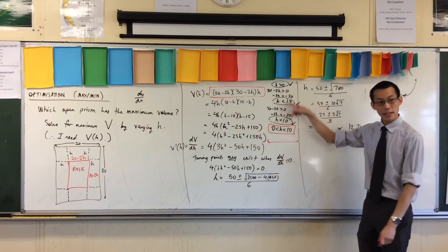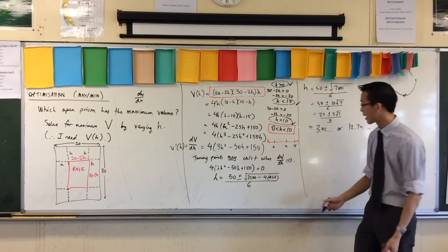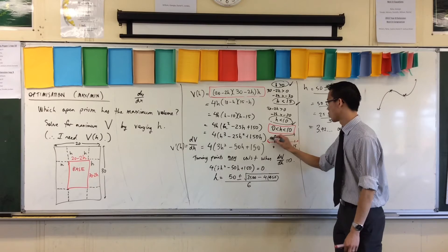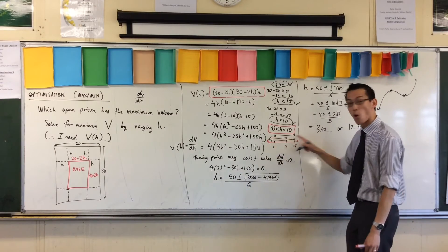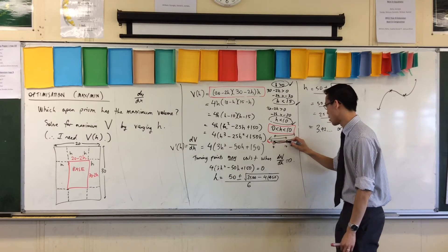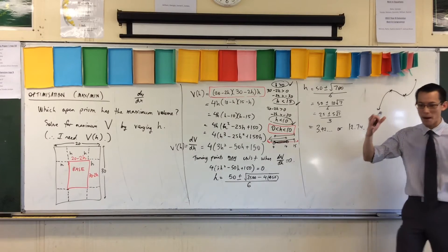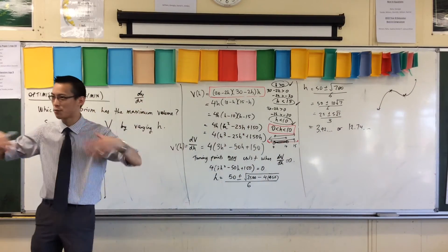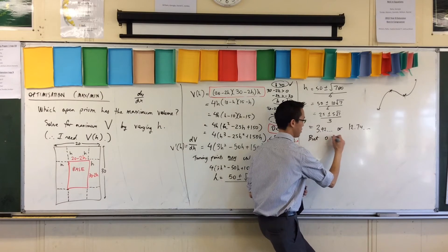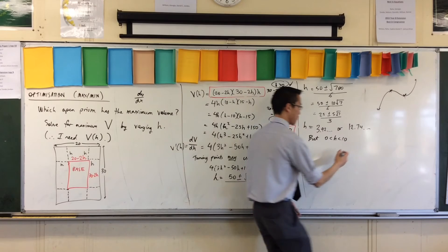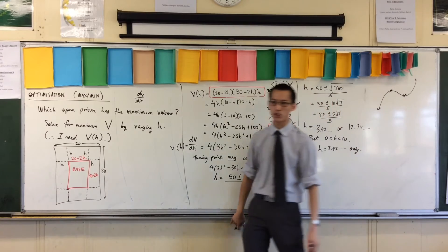So if you want to think about it this way, if I plot all of these inequalities on a number line, I've got zero here and 10 here and 15 here. I'm going to get this one and this one and this one, but I actually want all of them at the same time and the only region that satisfies all three is zero to 10. Does that make sense? It's got all three overlapping. Now that I've established that, zero is less than H is less than 10. Therefore, H is 3.92 dot dot dot only. That's the only actual solution.